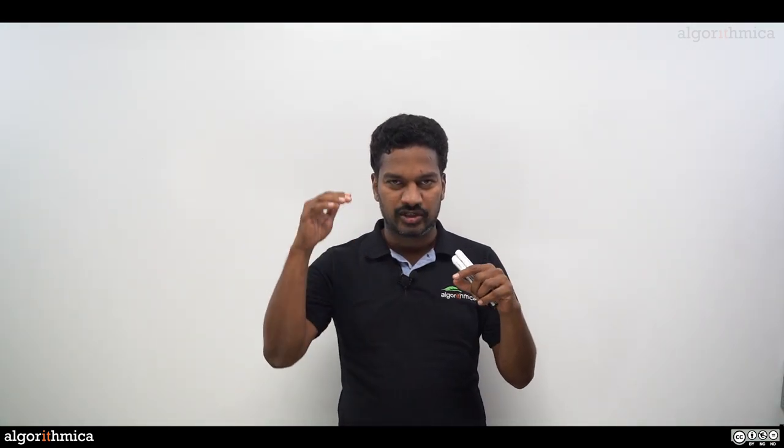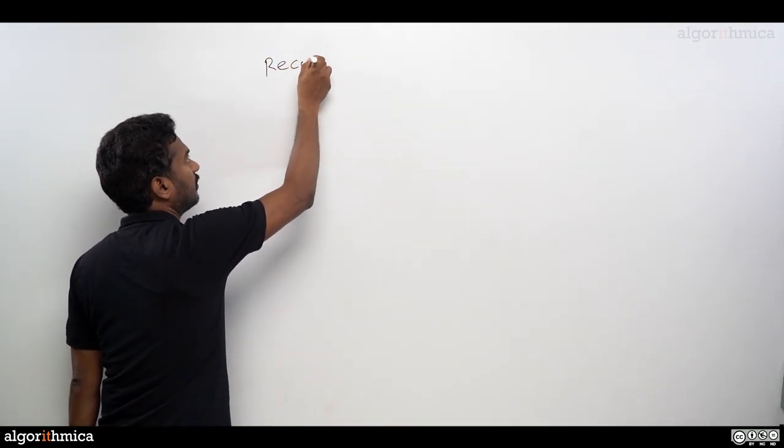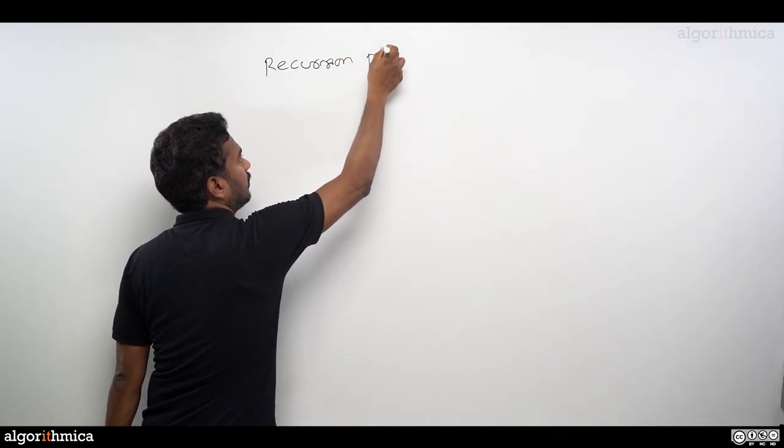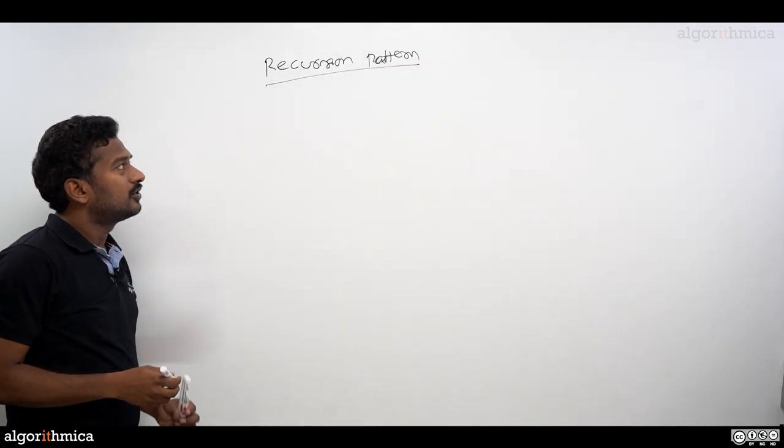Today we are going to understand a new pattern called the recursion pattern. In our framework, the second stage deals with patterns that allow us to think and solve problems across any given domain. One of the critical patterns is the recursion pattern. Before going into different varieties of domains, let's get an understanding of what this thinking process means and what benefit this pattern has while solving problems.